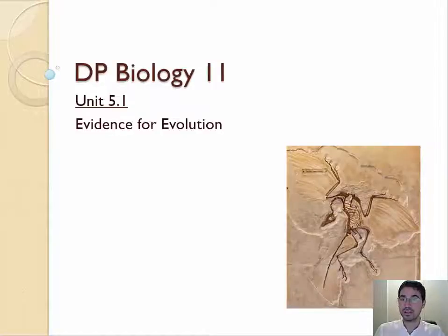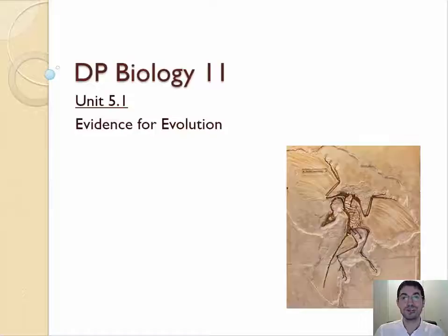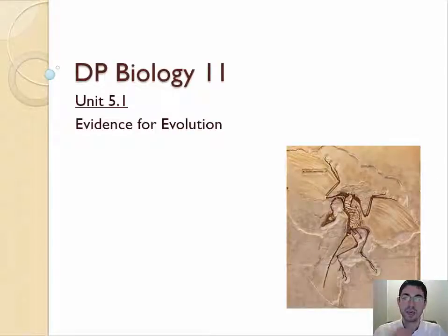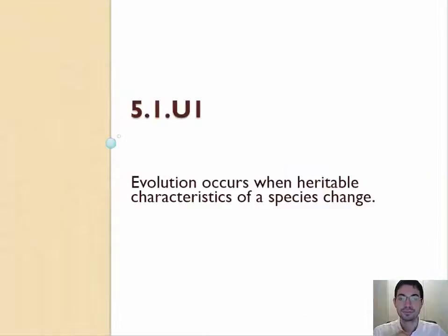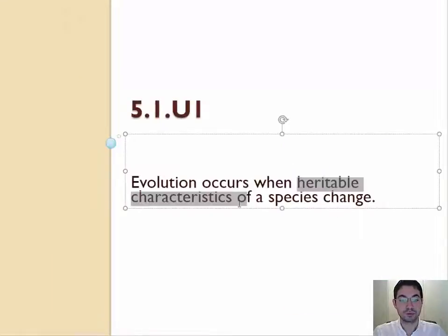So we're going to dive right in. Those are the three big words you need to know: fossils, homologous structures, and selective breeding. Now, before we dive into that, remember that evolution occurs when a heritable characteristic changes over time.